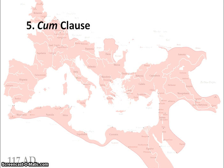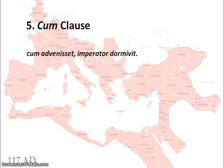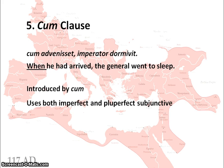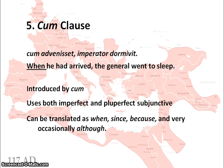The fifth use is a cum clause. 'Cum' here, unlike 'cum' meaning 'with' plus the ablative, most often means 'when'. For example: 'cum advenisset, imperator dormivit' — when he had arrived, the general went to sleep. 'Advenisset' is a pluperfect active subjunctive. Cum clauses use both the imperfect and the pluperfect subjunctive. 'Cum' can be translated as 'when', 'since', 'because', or occasionally 'although' — so it is important to consider context before deciding which translation makes most sense.